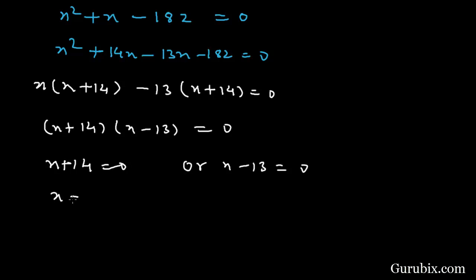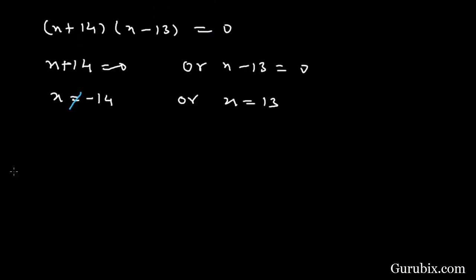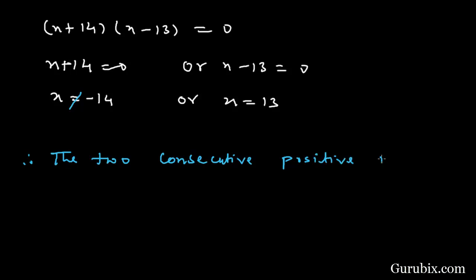This means x plus 14 equals 0 or x minus 13 equals 0, giving x equals minus 14 or x equals 13. Since the integers are positive, x cannot equal minus 14. Therefore the two consecutive positive integers are 13 and 14. This is the solution of the question. Thank you.